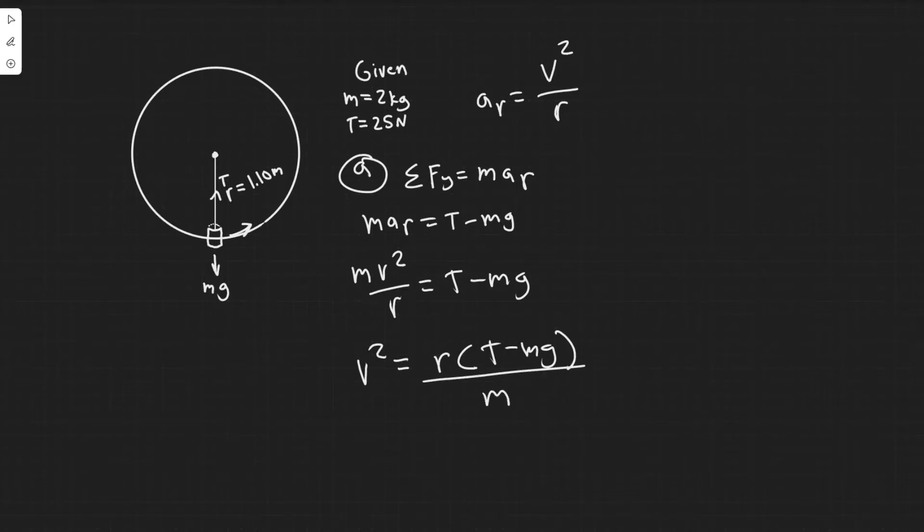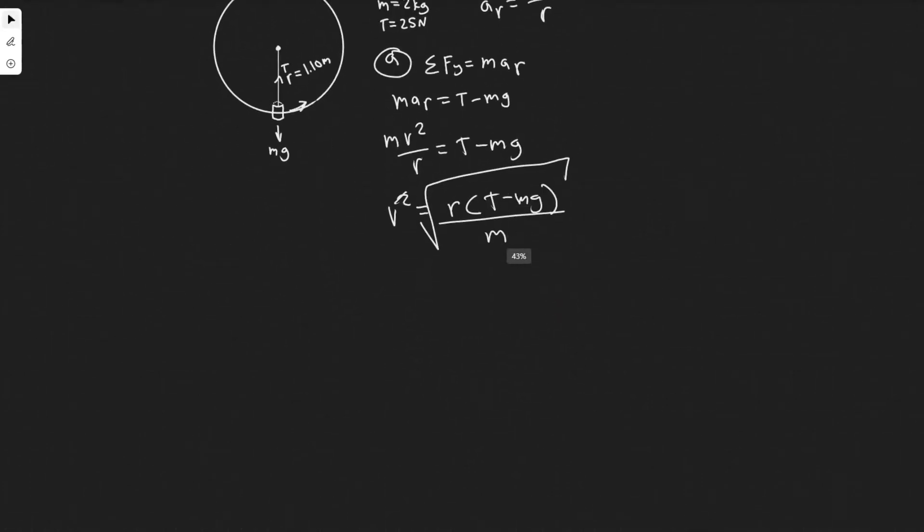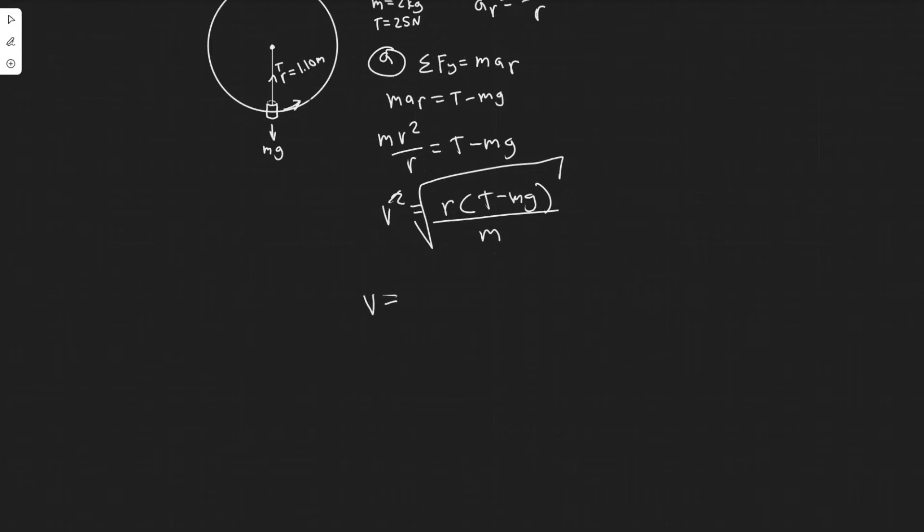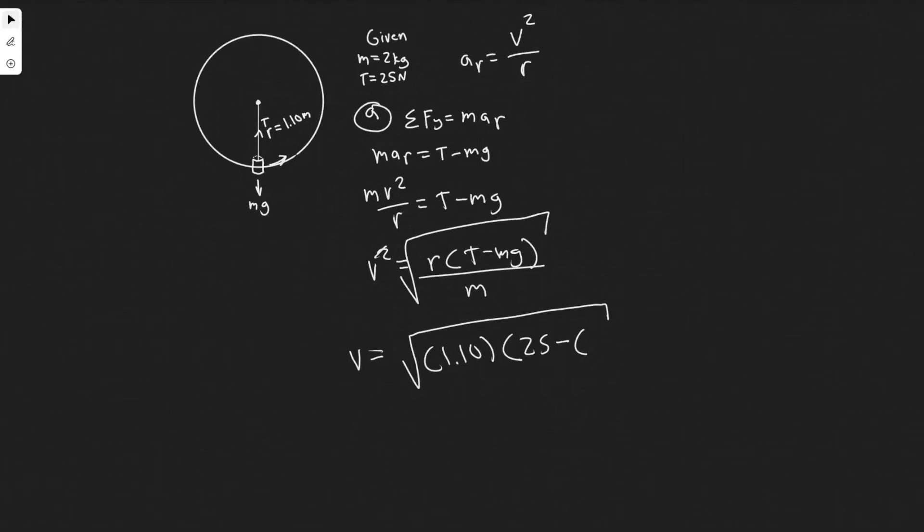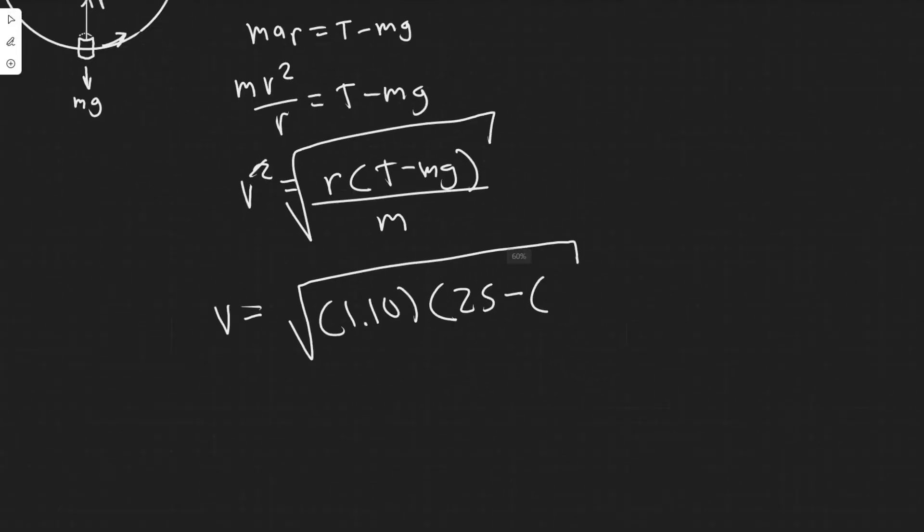Then square root both sides, and you'll have v equals the square root of r times T minus mg all over m. So you're going to have your v equals the radius, which is 1.10, times the tension, which is 25 newtons, minus the mass, which is 2 kilograms times 9.8. Keep in mind, this is all inside of it. And then you divide by the mass again, which is 2.